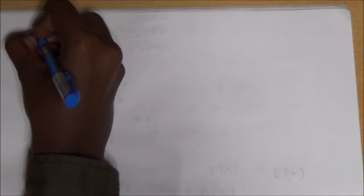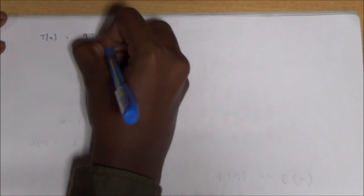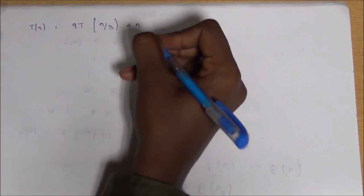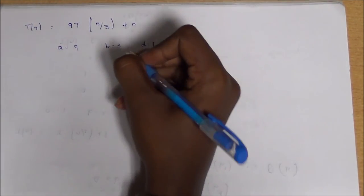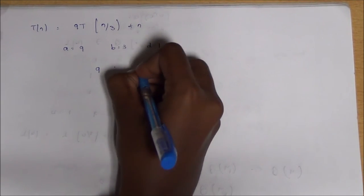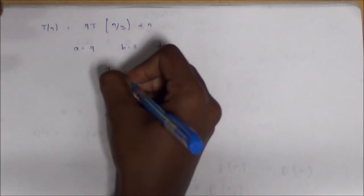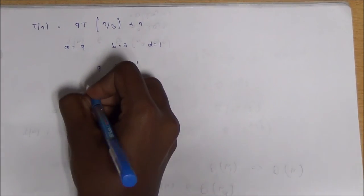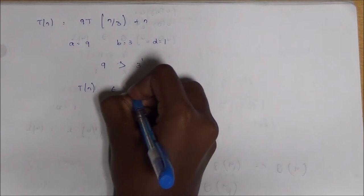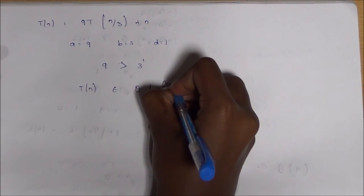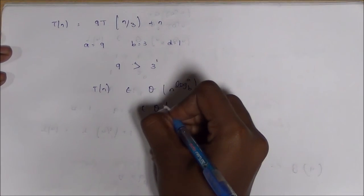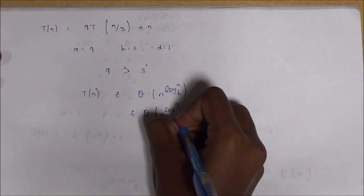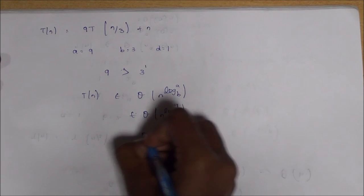Now let's move to the third type. The equation is T(n) = 9T(n/3) + n. Comparing with the general equation, a equals 9, b equals 3, and d equals 1. Substituting: 9 compared to 3^1 — since a is greater than b^d, this is the third condition. This leads to the conclusion that T(n) belongs to big theta of n^(log 9 to the base 3), which simplifies to big theta of n².